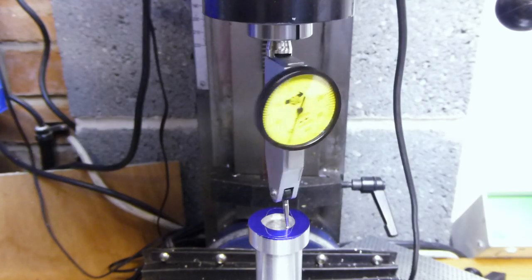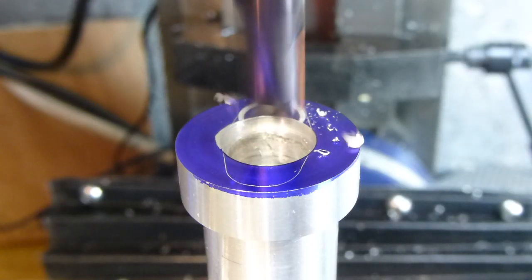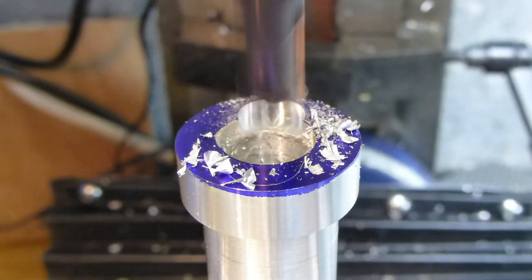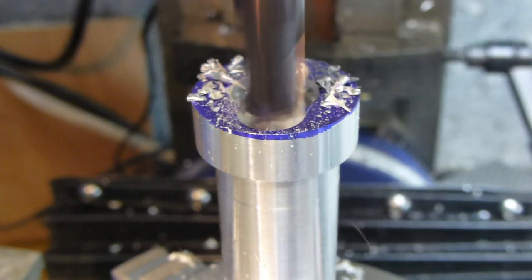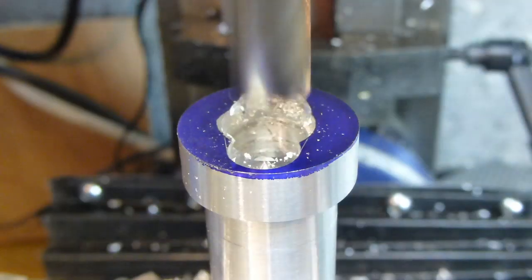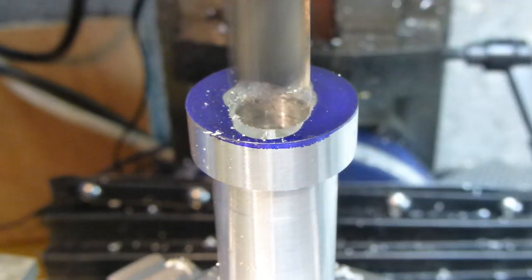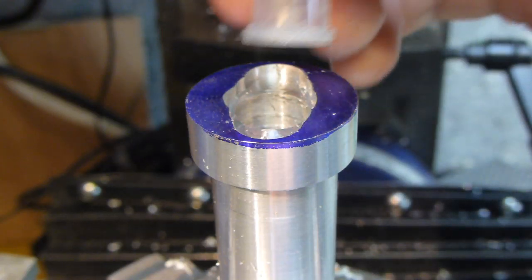Once centered I used two different sizes of end mill to plunge in. The result isn't exactly the same shape as the flange, but it's close enough.